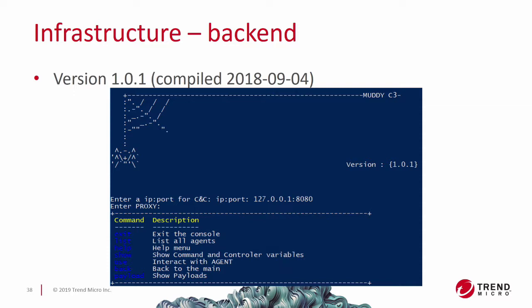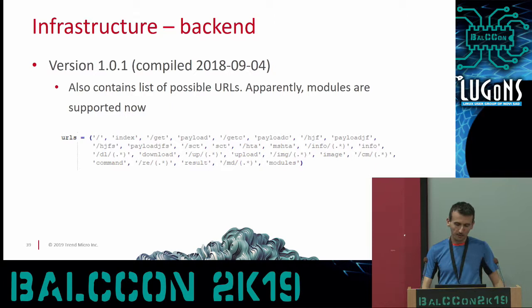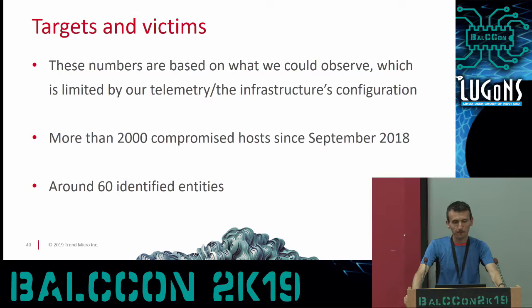We also found a new version 1.0.1 of the C2 backend. It has new ASCII art this time - a spider and web in ASCII art. Looking at the list of implemented URL addresses, the last one is called 'modules,' suggesting the newer version implements some modules, but we didn't manage to get any. We might find them in the future.